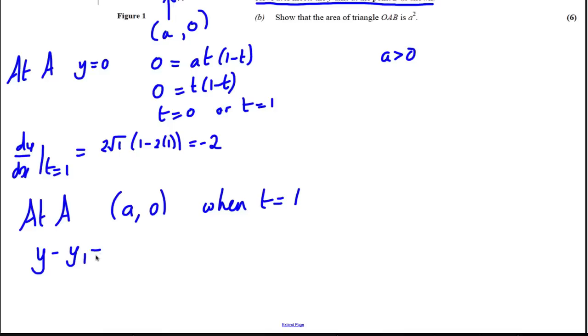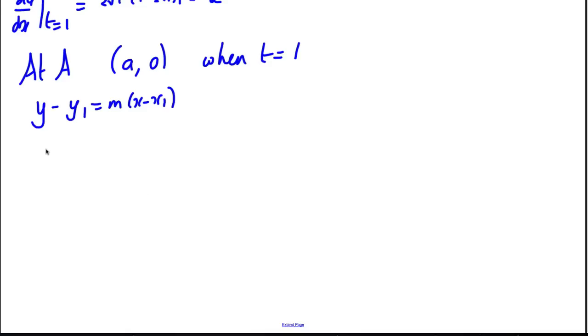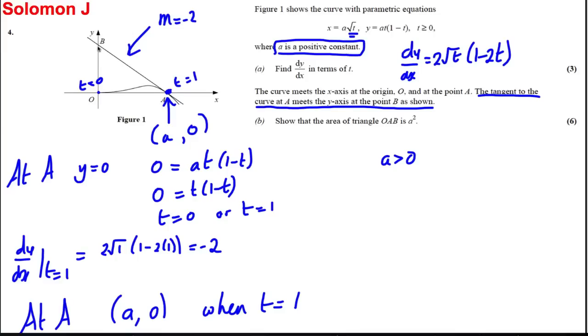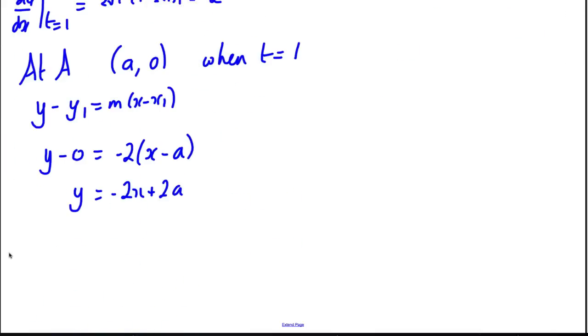Now we can write the equation y - y₁ = m(x - x₁), so y - 0 = -2(x - a), giving y = -2x + 2a. To find this coordinate at B, x equals 0, so y equals 2a.